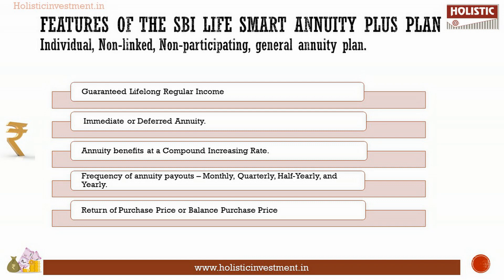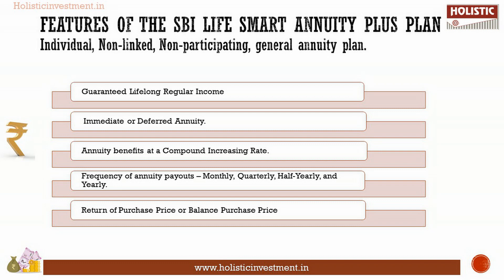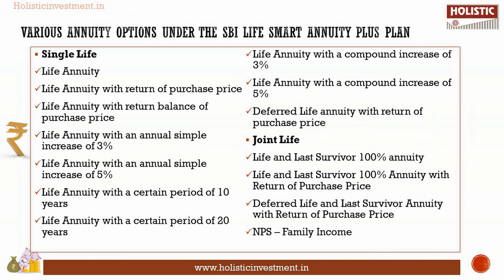Other features include the option to avail annuity benefit at a compounded increasing rate, and the option of return of purchase price or balanced return of purchase price. The annuity payout amount will be in accordance with the chosen annuity option. It could be deferred or immediate, with or without return of purchase price, single life or joint life. Some options offer a year-on-year increase. Choose the annuity option that suits your requirement.